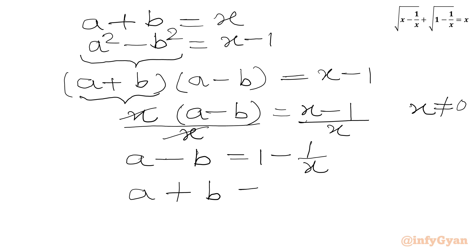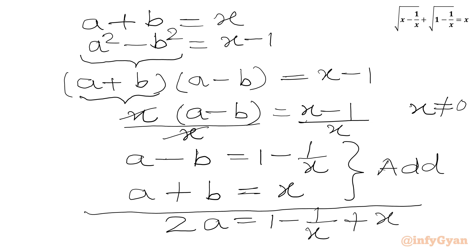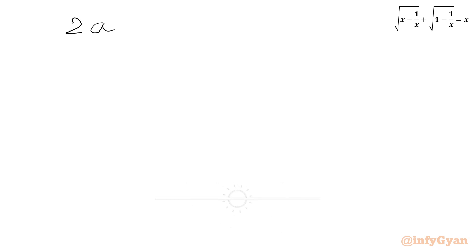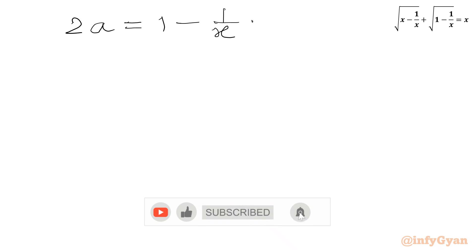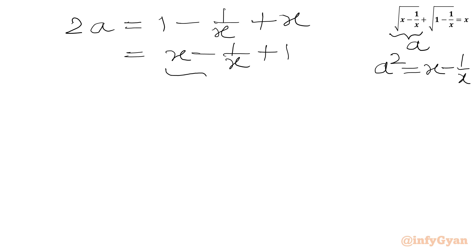Now we write our first equation again: a plus b equal to x. Adding the two equations, the plus b and minus b cancel, giving 2a equal to (1 minus 1 over x) plus x. We can rewrite this as 2a equal to x minus 1 over x plus 1. Remembering that our substitution gives a squared equal to x minus 1 over x, we can replace x minus 1 over x with a squared.